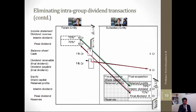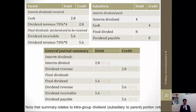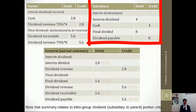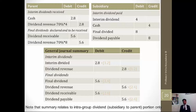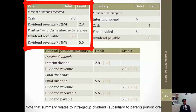For the subsidiary's entries: debit interim dividend $4 million and credit cash; credit dividend payable and debit final dividend $8 million. For the parent, who owns 70% of the subsidiary's equity, for the interim dividend of $4 million the parent receives 70%, which is $2.8 million — receive cash and credit dividend revenue. For the final dividend declared of $8 million, the parent will receive only 70% of 8, that is $5.6 million.